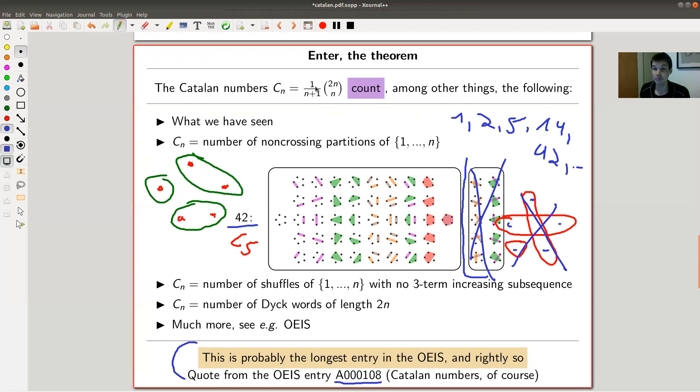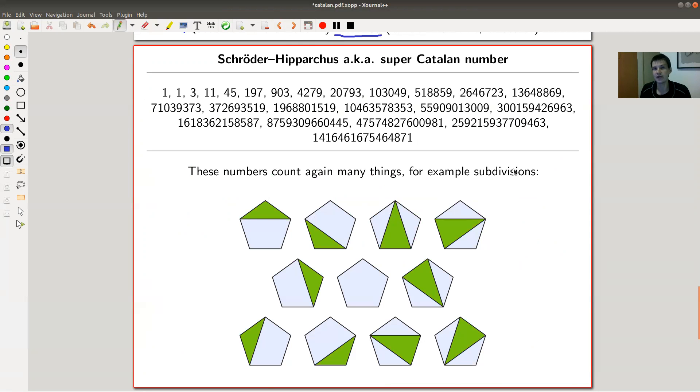And of course you can generalize Catalan numbers. And there have been many, many generalizations of Catalan numbers. Some are linked in the description. Like the super Catalan numbers, whatever that means. I mean, super Catalan, super must be good, right? So super Catalan numbers, whatever. They also have different names, maybe some better names, whatever.